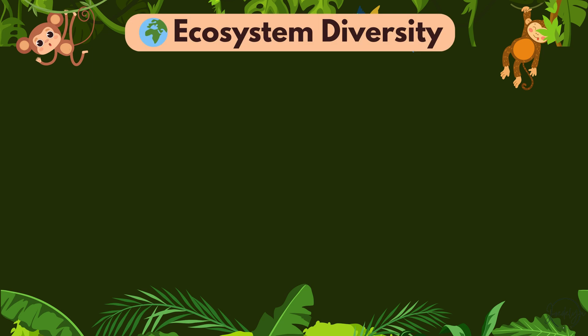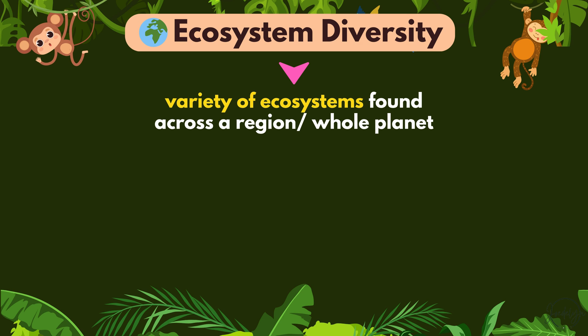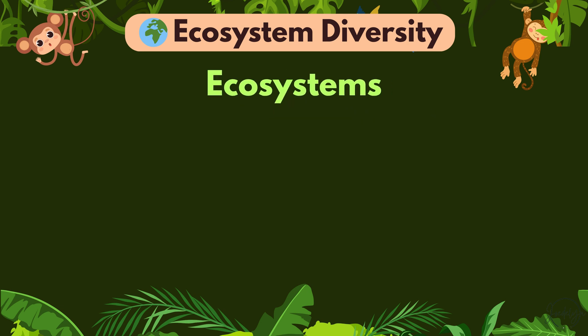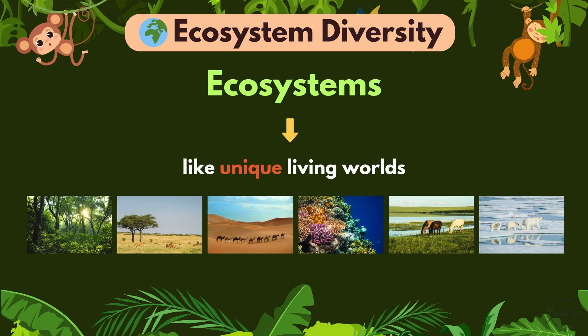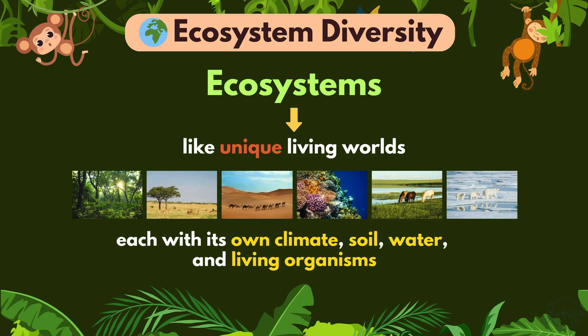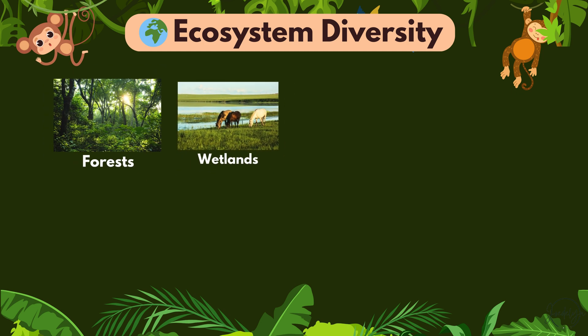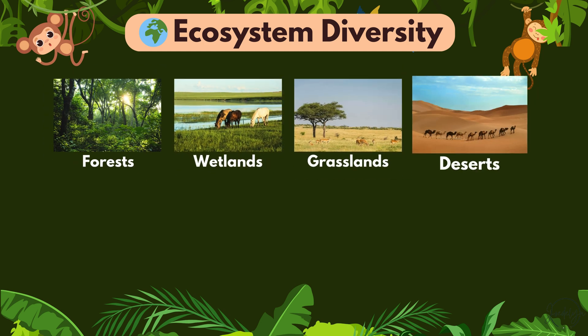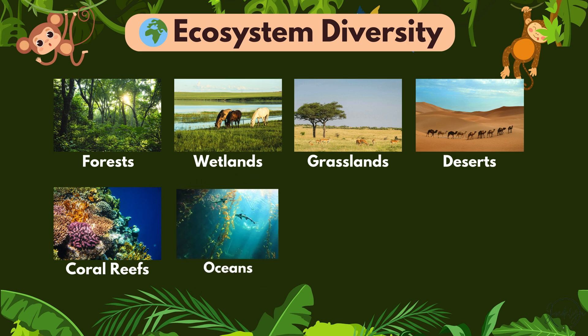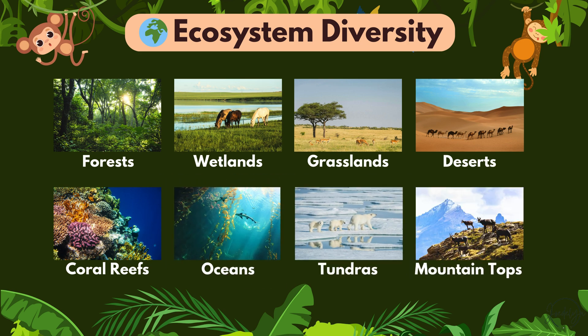Now let's dive into ecosystem diversity. Ecosystem diversity is the variety of ecosystems found across a region, or even across the whole planet. Ecosystems are like unique living worlds, each with its own climate, soil, water, and living organisms. Think of forests, wetlands, grasslands, deserts, coral reefs, oceans, and even mountaintops.